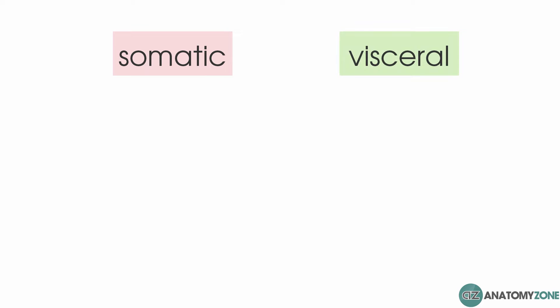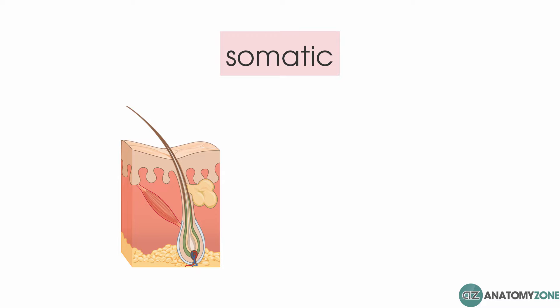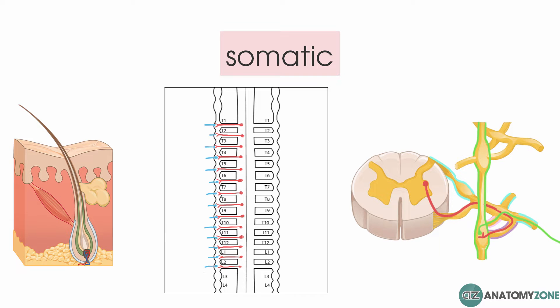The branches of the sympathetic chain have somatic and visceral distribution, so somatic relates to the skin and the body wall and visceral relates to the internal organs. Each spinal nerve has a contribution from at least one grey ramus and this supplies a segmental skin area with these sympathetic fibres. This set up is like the first example we looked at in the previous tutorial, where the sympathetic fibre leaves the ventral horn and enters the sympathetic ganglion via the white ramus and then forms a synapse with the post ganglionic neuron which leaves via the grey ramus and travels in the spinal nerve to supply the skin.